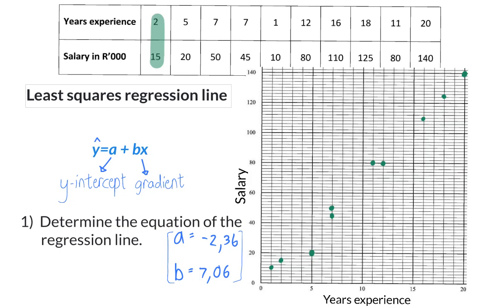Therefore, the equation of our regression line will be y is equal to minus 2 comma 36, plus 7 comma 06 x.